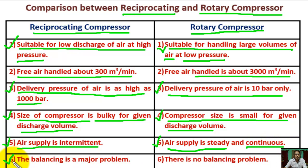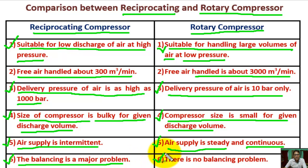Point 6: For reciprocating compressor, balancing is a major problem because of the reciprocating or sliding parts. For rotary compressor, there is no balancing problem because it mostly has rotating parts.